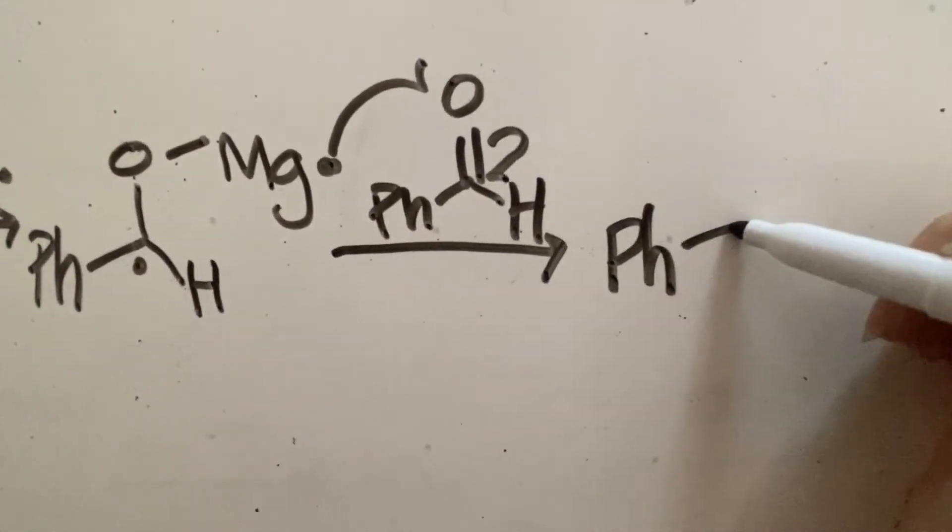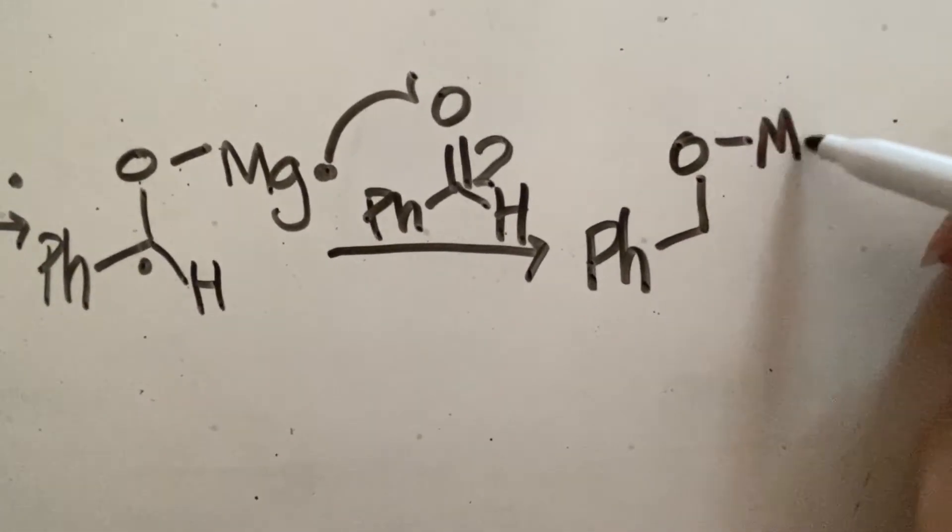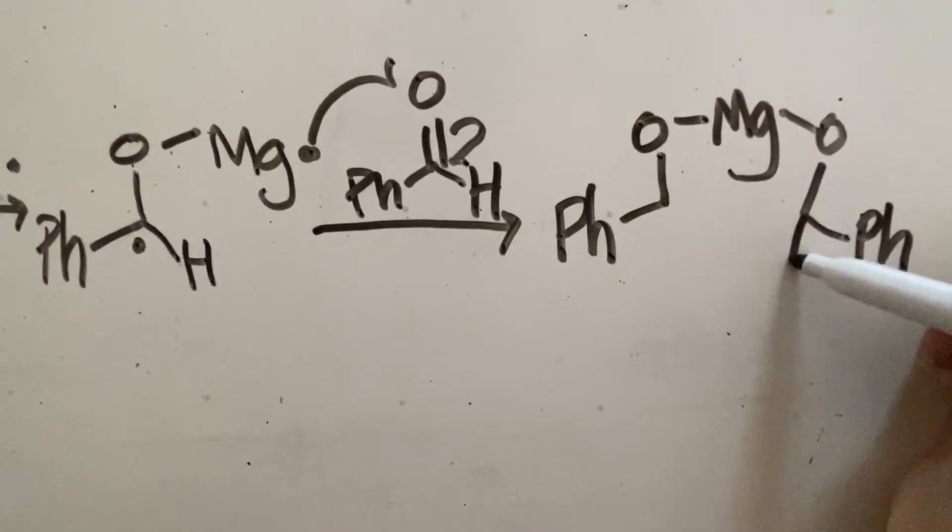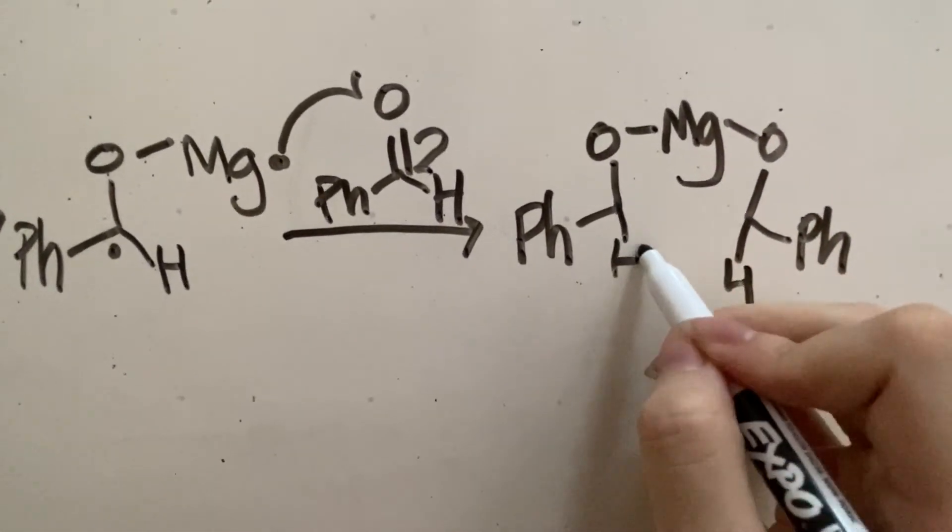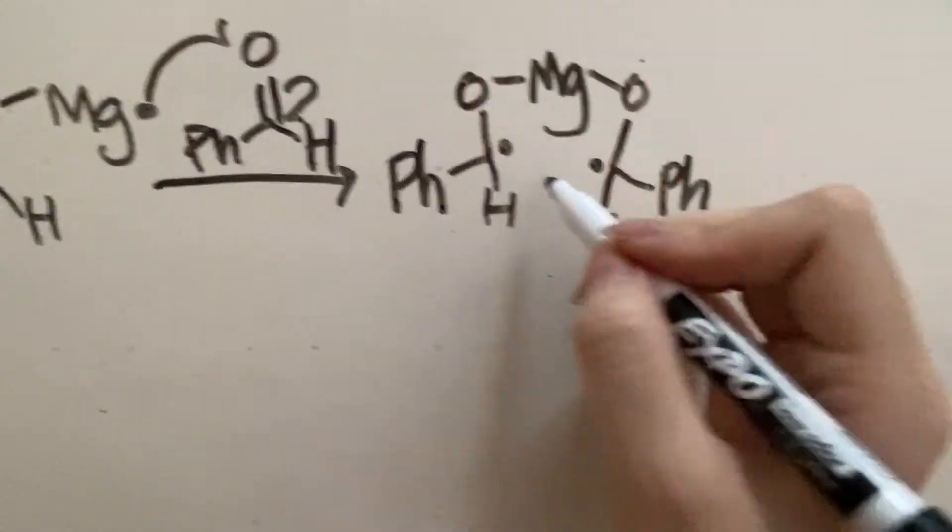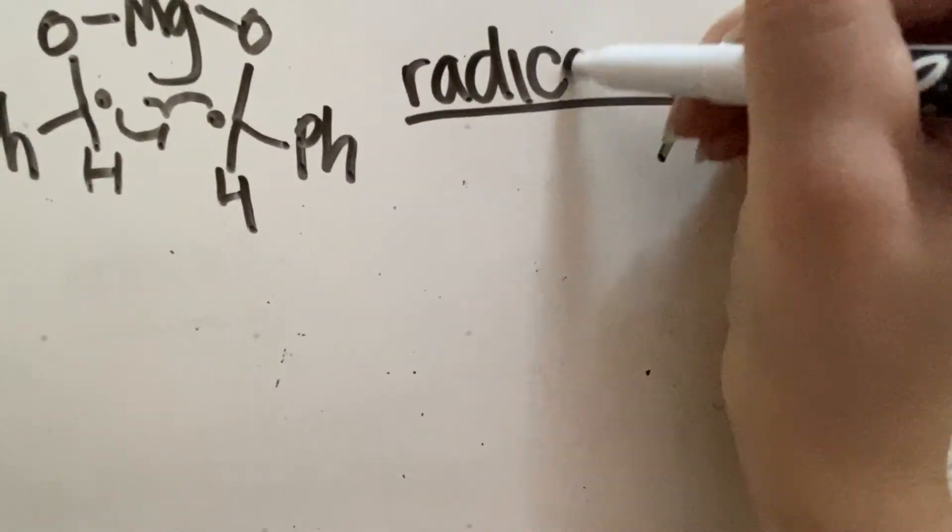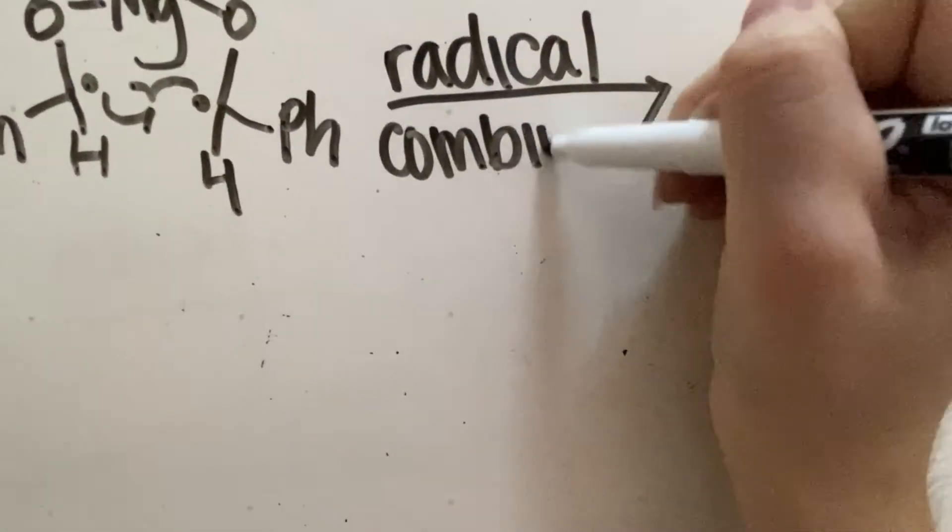And so, in the product of this reaction, we see that the oxygen is now bonded to the magnesium. Now, we have free radicals on the carbon atoms, so through radical combination, a new bond will be formed between the carbon atoms.